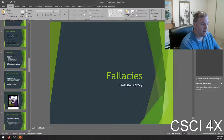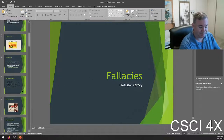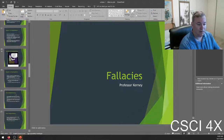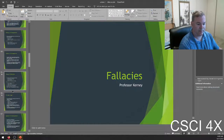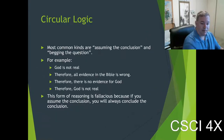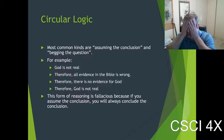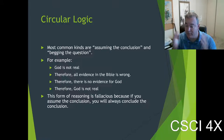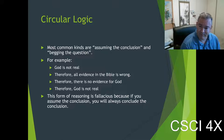Welcome everybody. We're going to continue our talk of fallacies today. Where did we leave off? Circular logic. Circular logic is basically when you assume X to be true, and your conclusion proves that X is true.